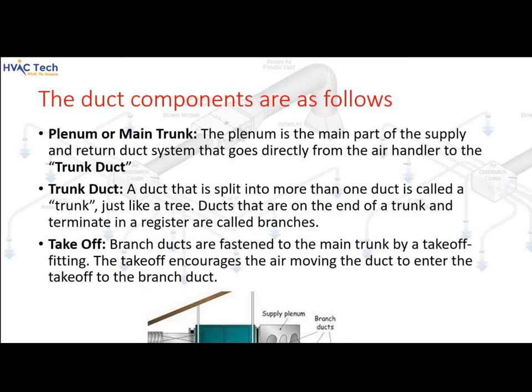The duct components are as follows: the plenum or main trunk is the main part of the supply and return duct system that goes directly from the air handler to the trunk duct. A trunk duct is one that is split into more than one duct — just like a tree. Ducts that are on the end of a trunk and terminate in a register are called branches. Branch ducts are fastened to the main trunk by a takeoff fitting, which encourages the moving air to enter the branch duct.